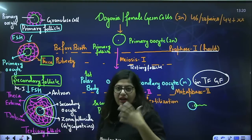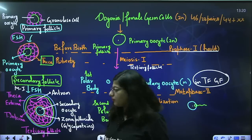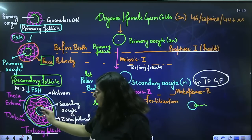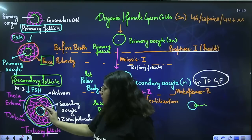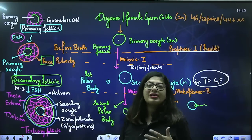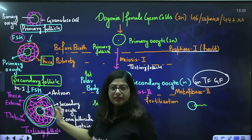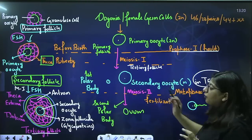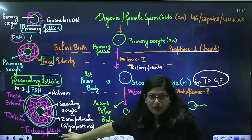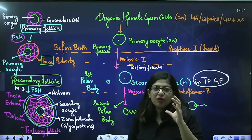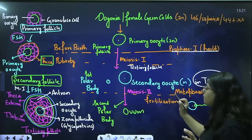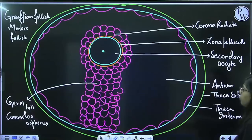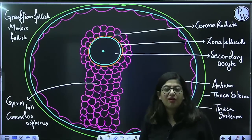As soon as secondary oocyte is formed it will secrete a zona pellucida layer. It contains a lot of granulosa cells, a small cavity starts to form known as the antrum, and theca interna and theca externa. After secondary oocyte is formed in the tertiary follicle it gets stuck at meiosis II at metaphase II. But the follicle will keep on developing, growing into a large Graafian follicle.